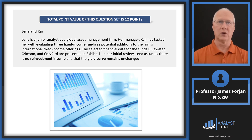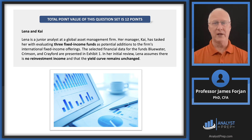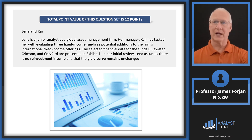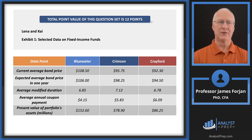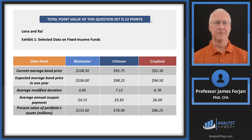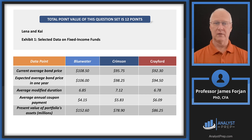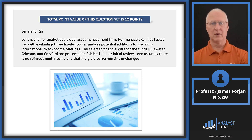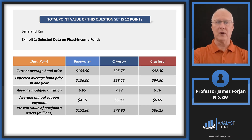An upward sloping yield curve means investors expect interest rates to rise, and just the opposite for a downward sloping yield curve. We won't test that explicitly here, but that base knowledge helps us understand Exhibit 1. There are the three funds across the top with characteristic data. Blue Water's today price is $108, and with the yield curve unchanged, if it's upward sloping and interest rates rise, Blue Water loses about $2.50 per bond.